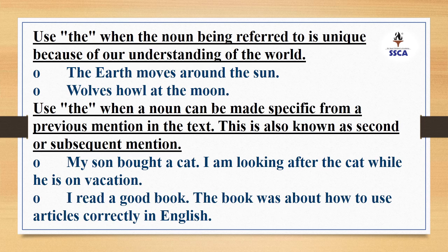Use 'the' when the noun being referred to is unique because of our understanding of the world. For example, 'The earth moves around the sun' — here earth and sun are specific, particular, and unique, so we use 'the' with them. In another example, 'Wolves howl at the moon' — the moon is also unique, so we use 'the' with it.